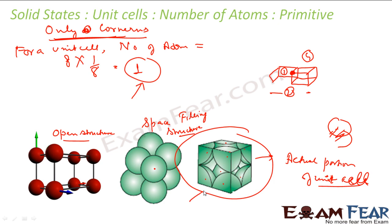Looks weird, right? If you visualize it clearly and think a little bit, you will see that this is nothing but one atom. What we have done is broken one atom into eight parts and stuck each part in the eight different corners — you will get this figure. You can try this with one spherical fruit, like a spherical potato.